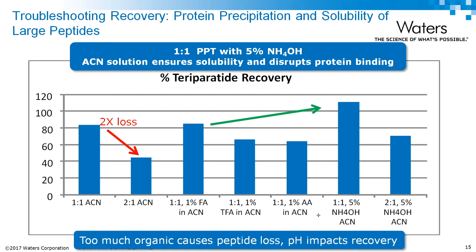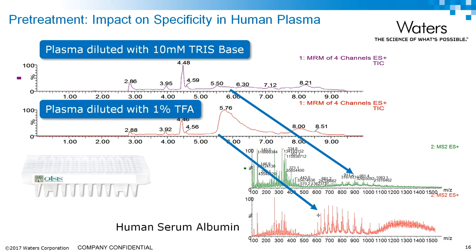Let's talk about solubility with an example for teraparatide — also a sticky, larger peptide. In elution solutions you don't want too much organic, and the same holds true for a precipitation pretreatment. At a one-to-one organic to plasma ratio, recovery is pretty good, but when you use more organic, you lose about half of the recovery because you start to precipitate the peptide. Additionally, looking at modifiers, better solubility for teraparatide is achieved under basic conditions than acidic conditions, resulting in about a 20% increase in recovery.